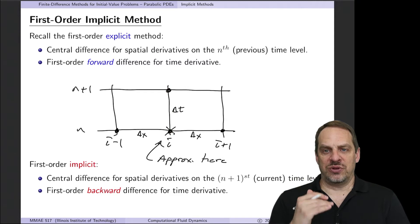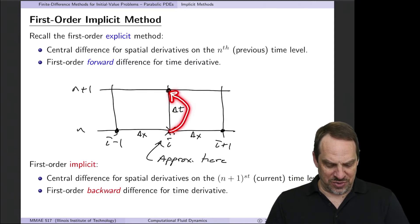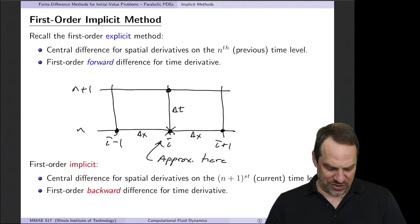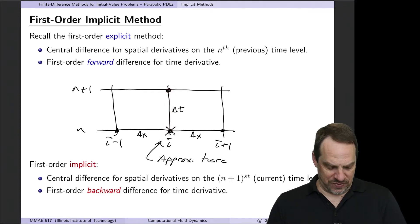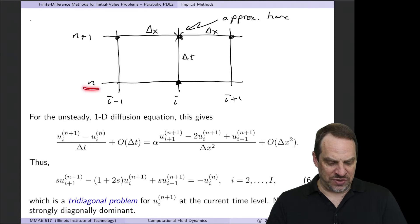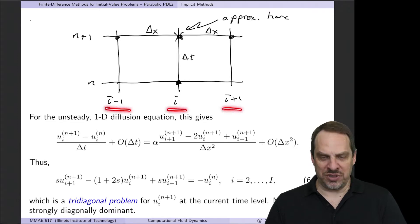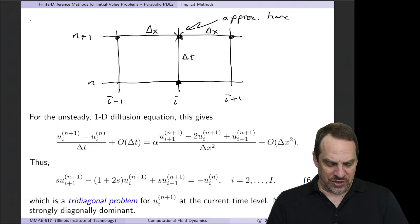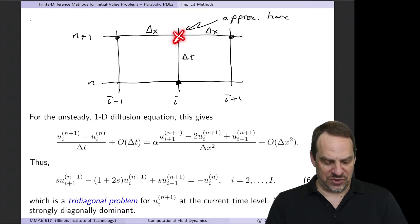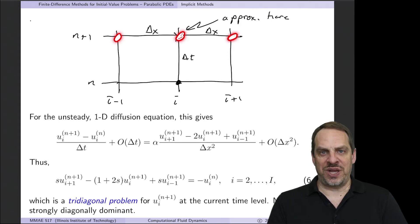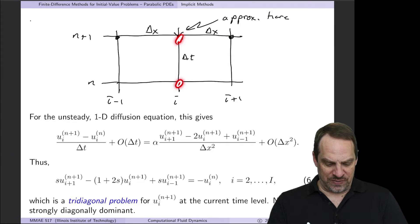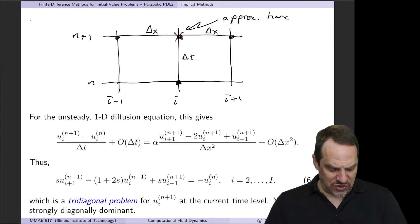For the first-order implicit method, we're going to shift the x marks the spot to the current, or n plus first, time level, and then use a backward difference in time to take care of the time derivative. We have the nth time step where we know the solution, the n plus first time step where we're seeking the solution, and the i minus 1, i, and i plus 1 grid locations. Delta t is the time step. The x marks the spot is now at the current n plus first time level.